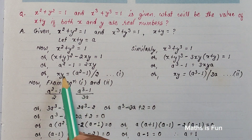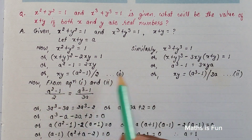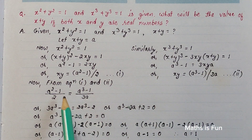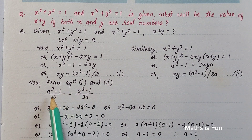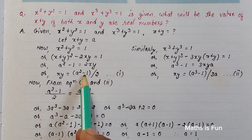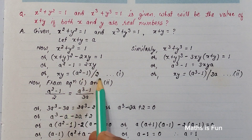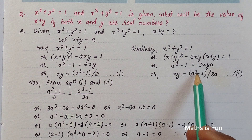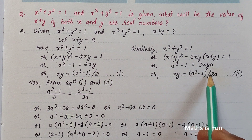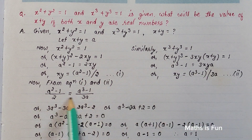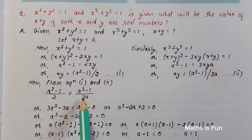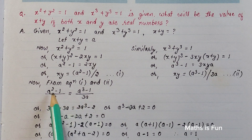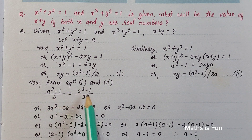Now we have expressions for xy from both equations, so we equate them. From equation 1 and equation 2: (a² - 1) / 2 = (a³ - 1) / 3a. Cross-multiplying both sides gives 3a(a² - 1) = 2(a³ - 1), which is 3a³ - 3a = 2a³ - 2.